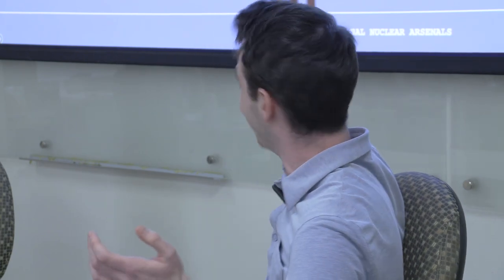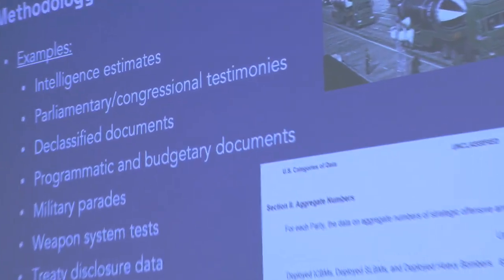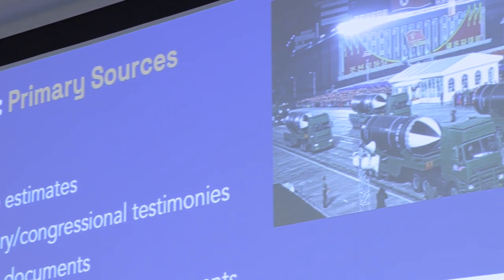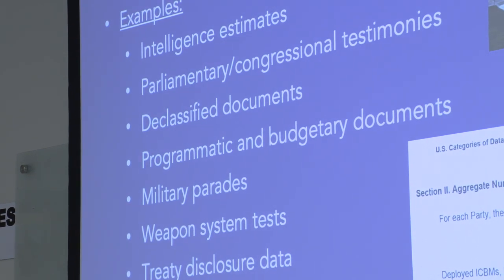It's rare that countries do this, so we have to use different types of sources with different advantages and disadvantages. Primary sources can include things produced by states — sometimes about themselves, sometimes about other states. These include intelligence estimates, congressional testimonies, classified documents, programmatic and budgetary documents, military parades — North Korea provides a nice example — weapons system tests, and treaty disclosure data.